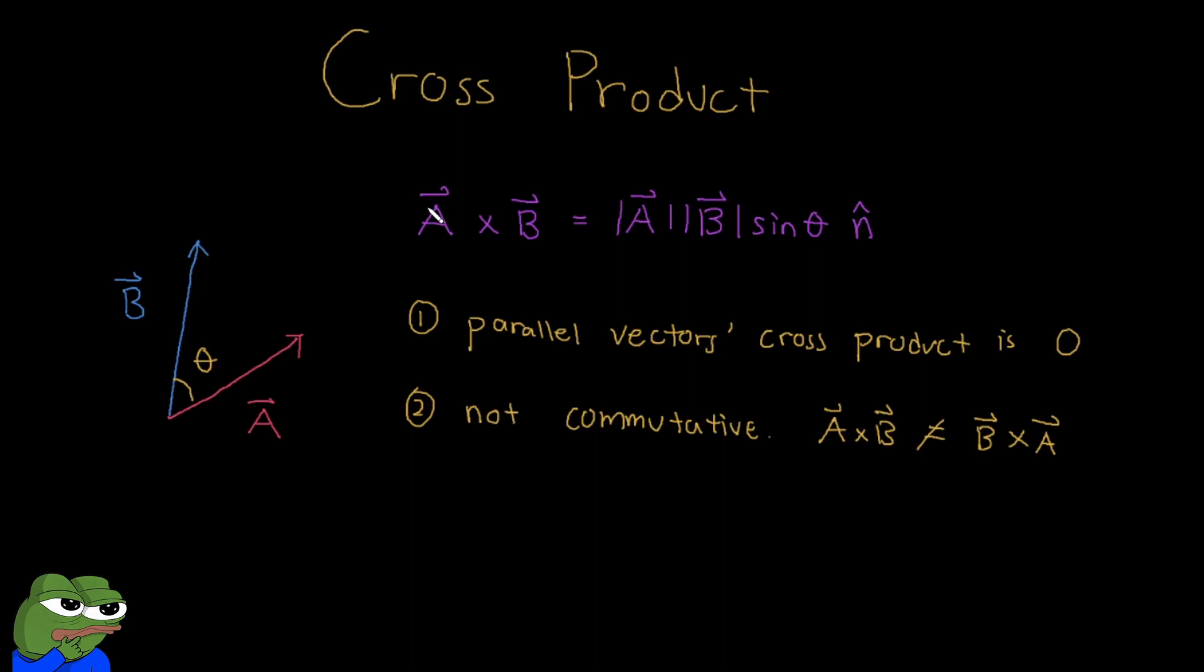Before we move on to mathematically taking the cross product of two vectors, here's some properties that you need to take note of. So first, parallel vectors cross product is zero. So if you can imagine, if A was right on top of B, based on our definition of magnitude, it doesn't make a parallelogram. So the area of the parallelogram that A and B make are zero. And so that's why this property number one is true.